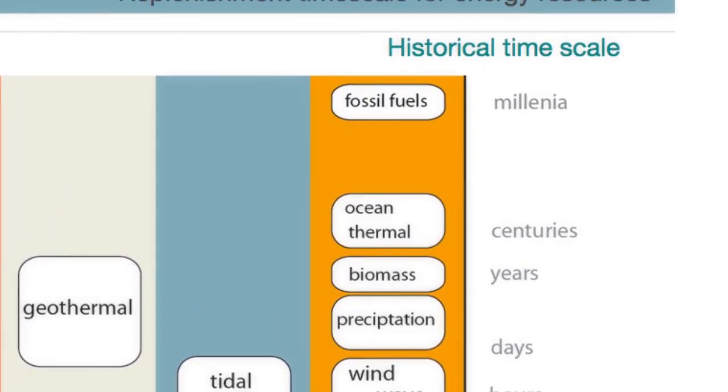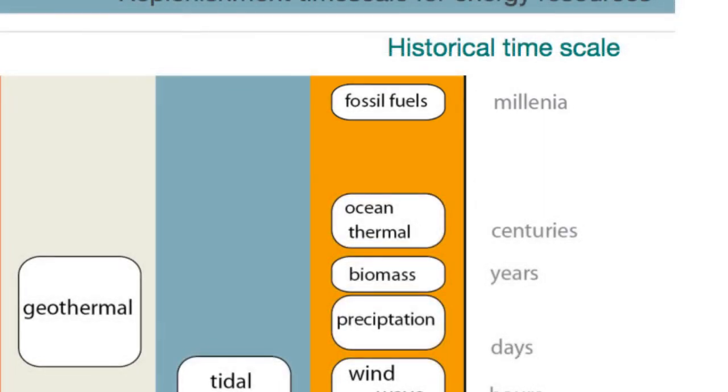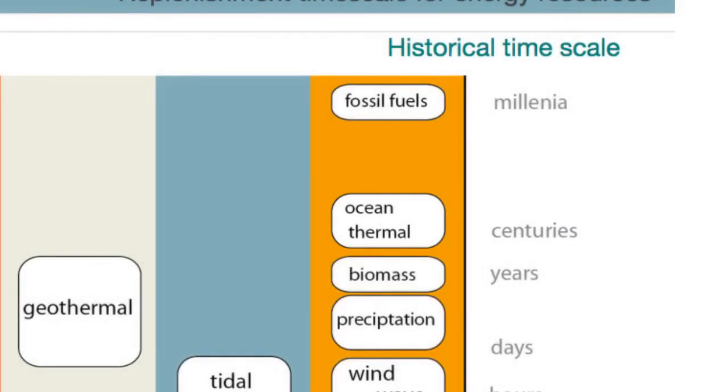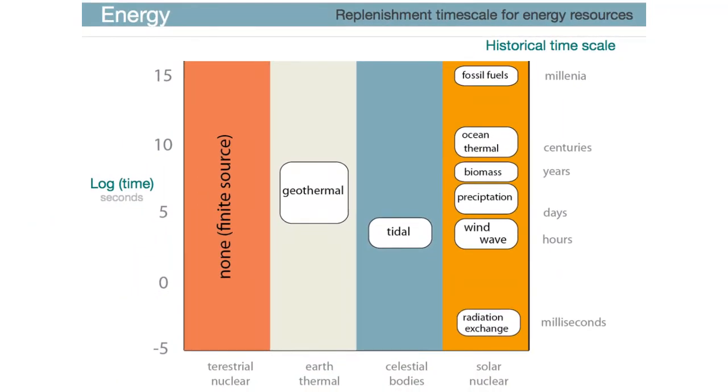And then fossil fuels, you could see, is suspected to replenish on the order of millennia, although it's hard to actually know if it's possible to replenish that. And then ocean thermal energy, which is something that is replenished on the order of centuries. Again, not really something we know, but something we are conjecturing. In a sense, so these are the four stable resources known on Earth.